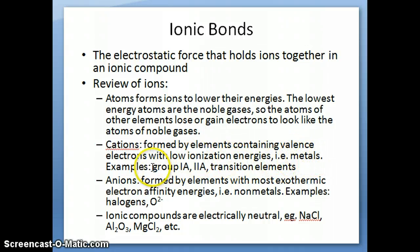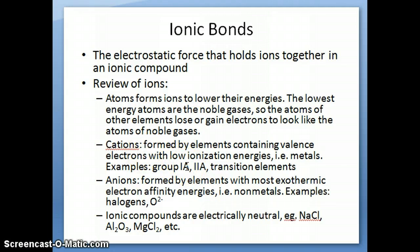For example, group 1A elements — lithium, sodium, potassium — tend to form cations: the sodium ion Na⁺, potassium ion. Group 2A and transition elements all tend to form metallic cations.